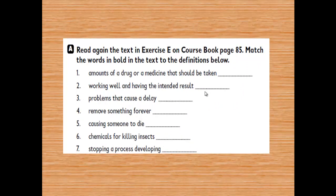Now let's do exercises in the workbook, page 50. Read again the text in exercise E on the course book, page 85. Match the words in bold to the definitions below: number one — amounts of a drug or medicine that should be taken; two — working well and having the intended result; three — problems that cause a delay; four — remove something forever; five — causing someone to die; six — chemicals for killing insects; seven — stopping a process from developing.